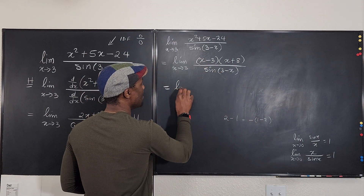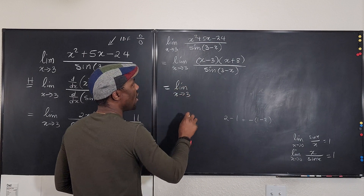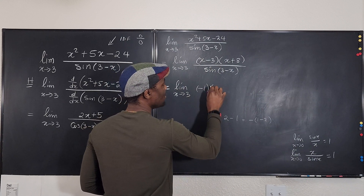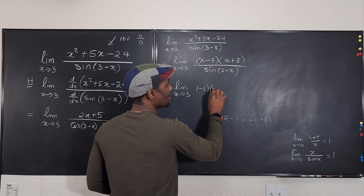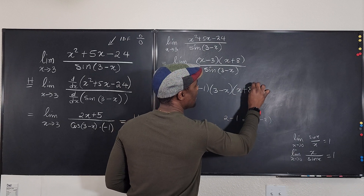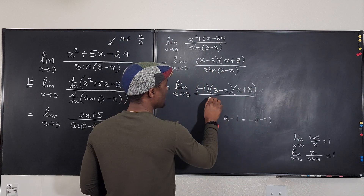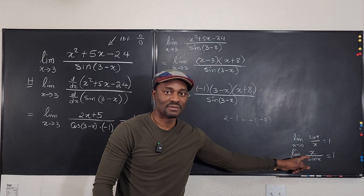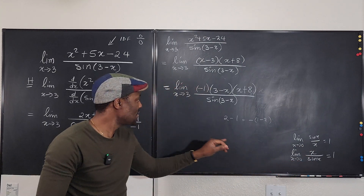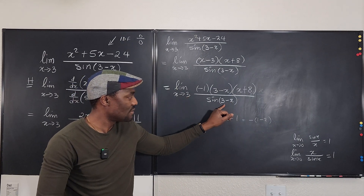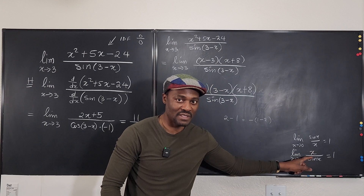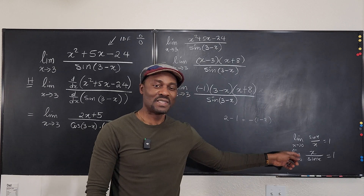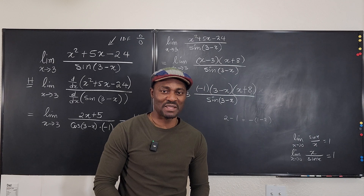So we can write this as the limit as x goes to 3 of negative 1 times (3 minus x)(x plus 8), all divided by sine(3 minus x). Right in the middle we now have what we're looking for. As x goes to 3, (3 minus x) goes to 0 and sine(3 minus x) goes to 0 — that's the situation we've created. This is what you should always do when sine is involved and you can't use L'Hôpital's rule: look for and create this kind of expression.